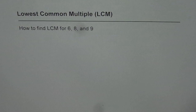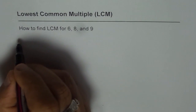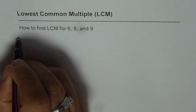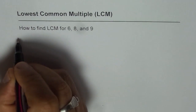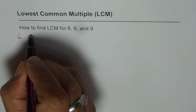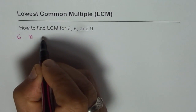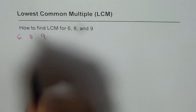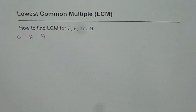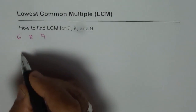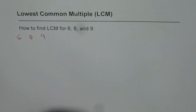One method is that we can list their multiples. So we have three numbers: 6, 8 and 9. What I will do is list all their multiples and then figure out which is the lowest common multiple.